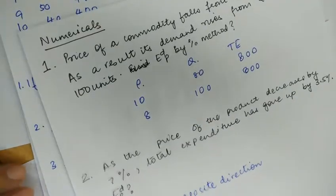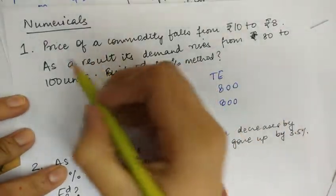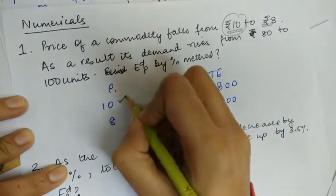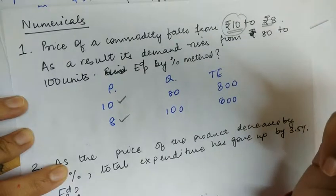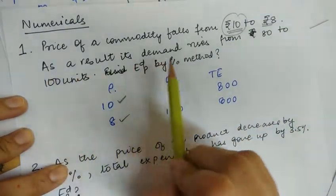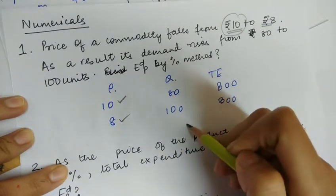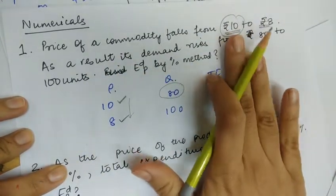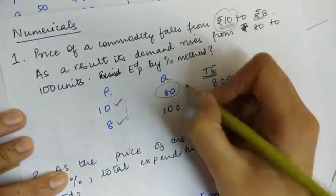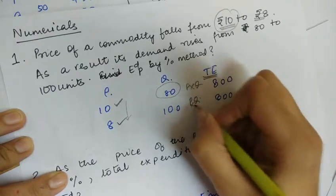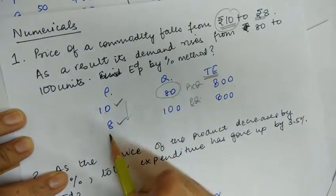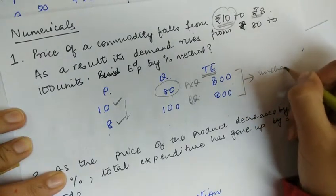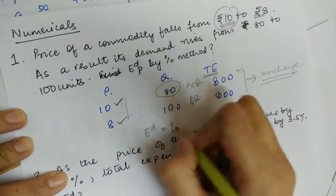Now for the first numerical: if the price of a commodity falls from Rs. 10 to Rs. 8, and as a result its demand rises from 80 to 100, find the elasticity of demand by the expenditure method. Total expenditure equals P × Q. Before: 10 × 80 = 800. After: 8 × 100 = 800. The total expenditure is unchanged due to the change in price, so the elasticity of demand is unit elastic.